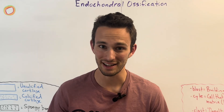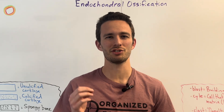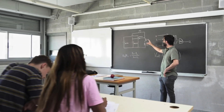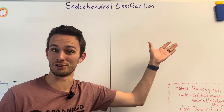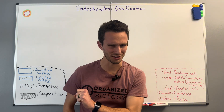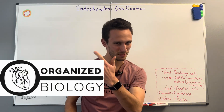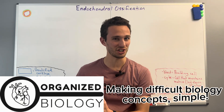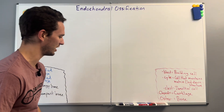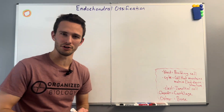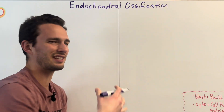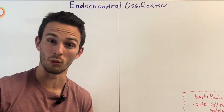There are many times in my anatomy class when I teach my students a specific process just so they sound smart when they go home and tell their families about endochondral ossification, and this is one of those times. Let's make you sound smart. Organized Biology here, where we make difficult biology concepts simple. Today we're talking about that pesky term endochondral ossification, and we need to break this word down first, because anytime you have a very complicated word, it usually tells you generally what it does or what it is.